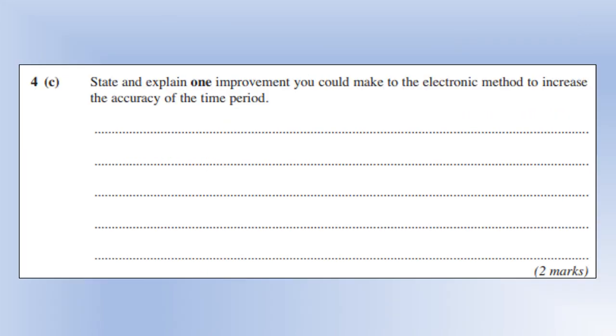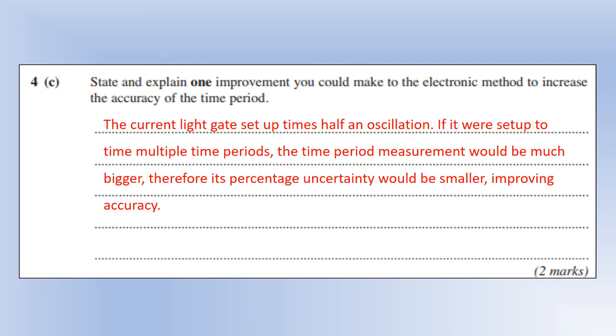And finally, state and explain one improvement you could make to the electronic method to increase the accuracy of the time period. Essentially, we're going to try and make the time longer. So the current light gate setup times half an oscillation. If we could somehow set it up to time multiple time periods, like we did with the stopwatch, we'd have a much bigger time period measurement, and therefore its percentage uncertainty would be smaller, even though the precision is the same. And that's going to improve the accuracy, and that rounds off this section of the practical exam. Thank you very much.